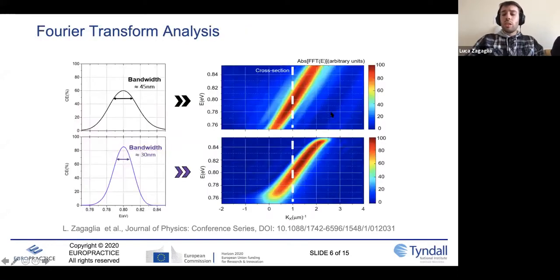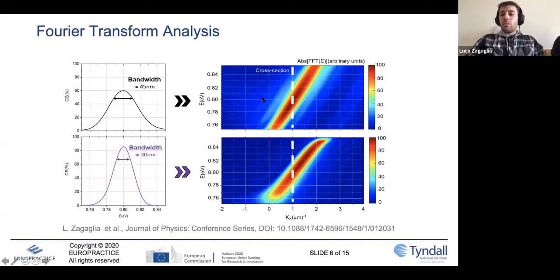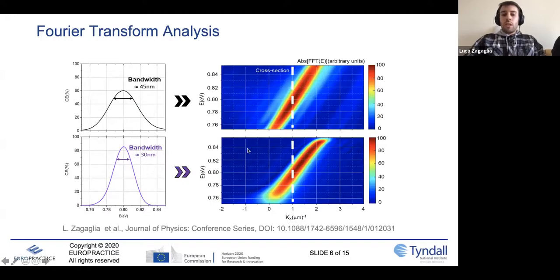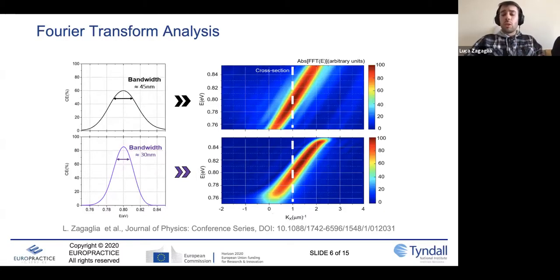This asymmetry is due to the bandpass filter effect. What we want to study today is why there is this reduction in bandwidth and why we see these different behaviors in the coupling efficiency spectrum. The first tool we can use is the spatial Fourier transform of the electromagnetic field emitted by the grating. Practically, we put a monitor on top of our structure in FDTD and collect the light emitted by the grating. We then do the Fourier transform and obtain the energies sustained by the structure as a function of the in-plane wave vector — in accordance with the Bragg law.